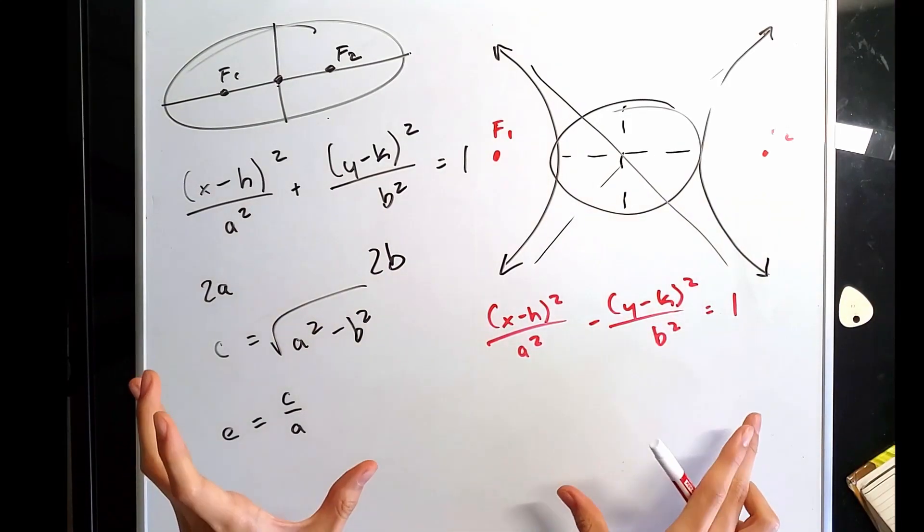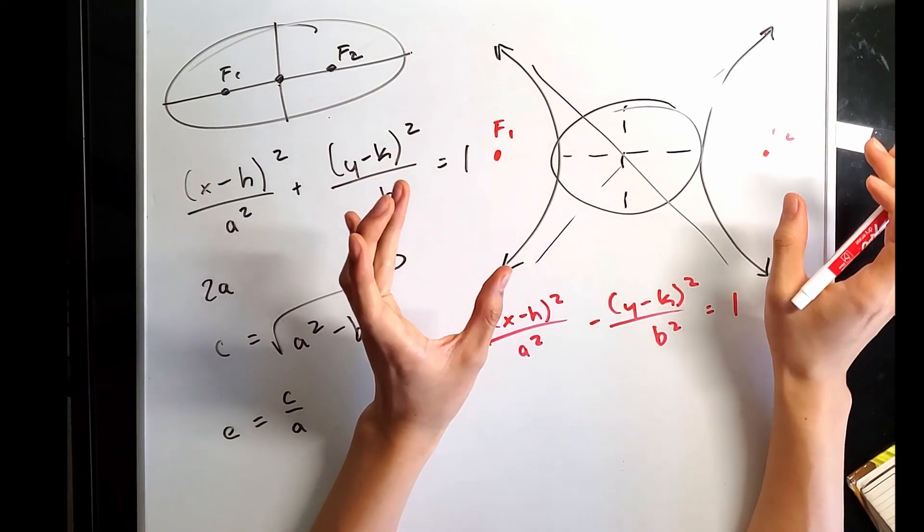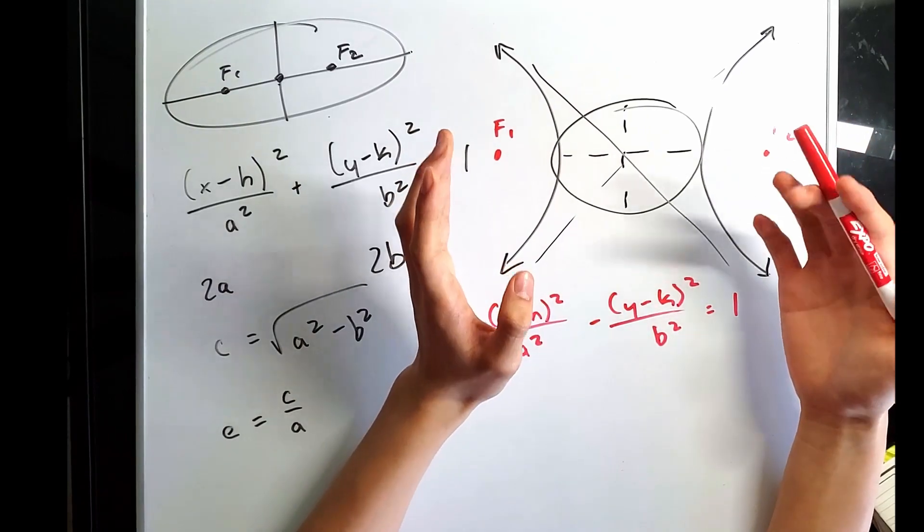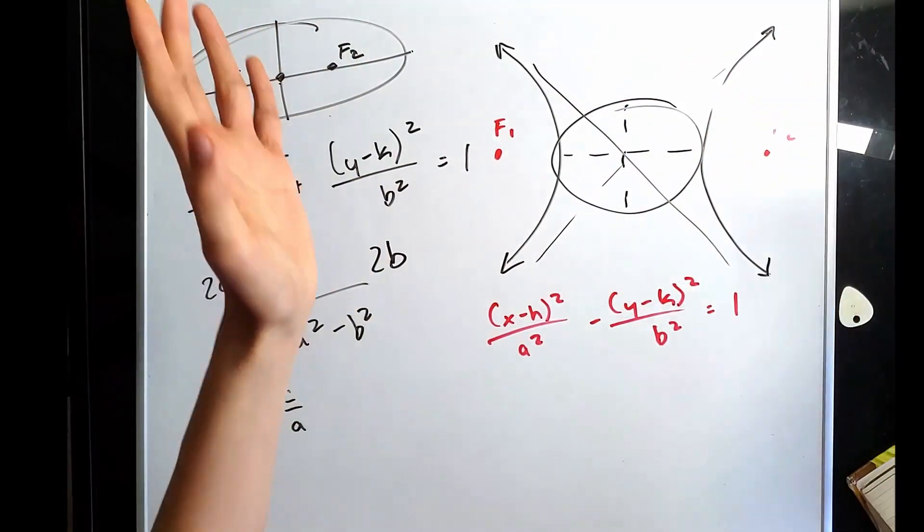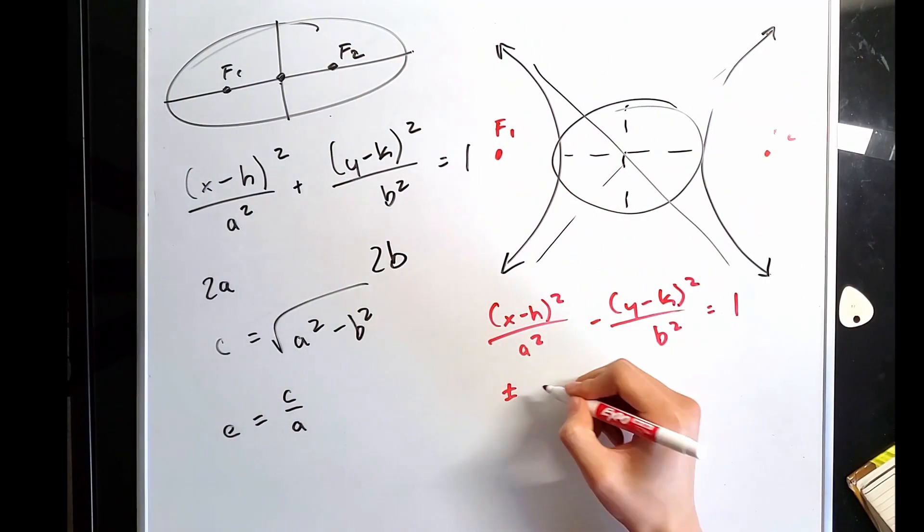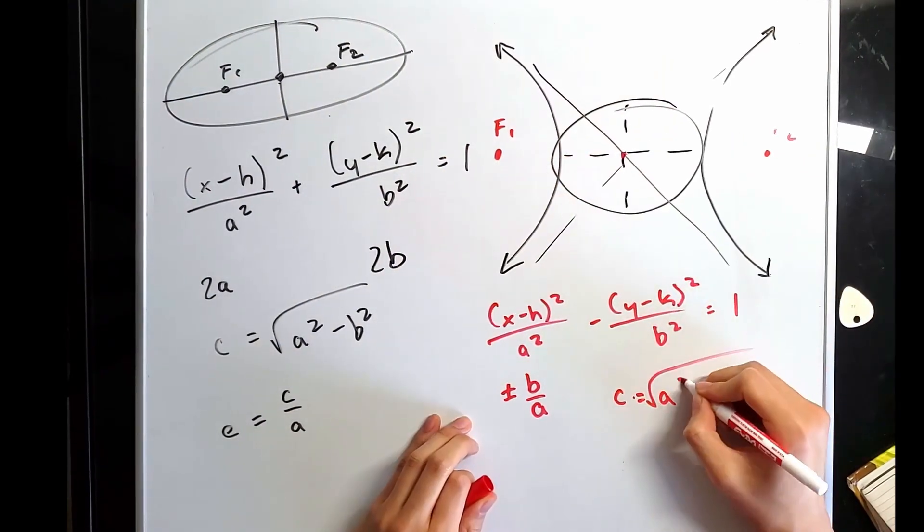Hyperbola's only difference in standard form is that they have negative instead of positive. So the hyperbolas are defined by their foci. Any point whose distance to the foci, the difference of the distances are a constant. That is why hyperbola, unlike ellipses, go out infinitely. Hyperbolas also have asymptotes. The asymptotes are at a slope of plus or minus b over a. The distance of the foci from the center point is square root of a squared plus b squared.